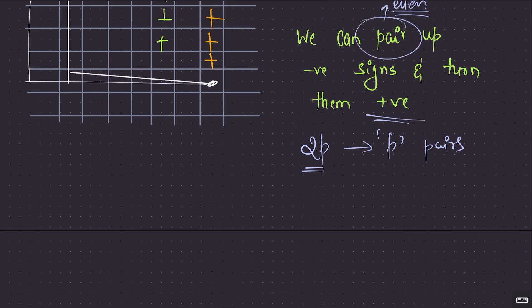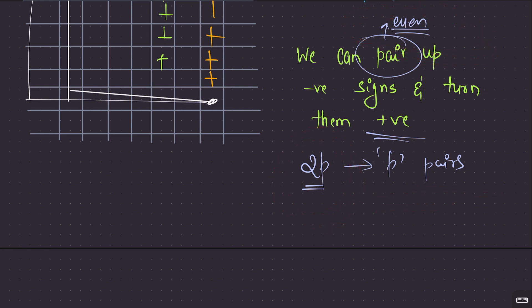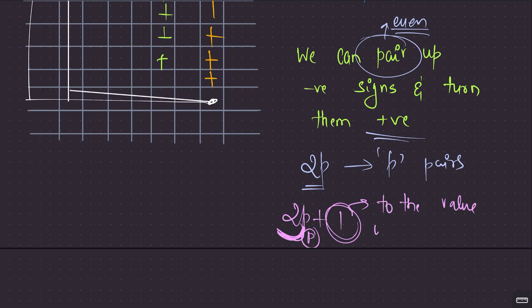The key observation: we can pair up negative signs and turn them positive. Any two negative signs can be paired up. So if we have an even number of negative elements — 2p of them — p pairs can be formed and all converted to positive, giving us the sum of absolute values of all elements. But if the count of negative elements is odd — say 2p+1 — we can form p pairs and destroy them, but one negative sign will remain. That remaining sign should be assigned to the element with the smallest possible absolute value.